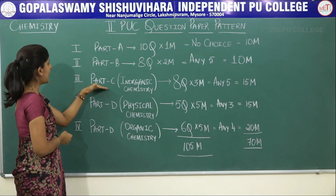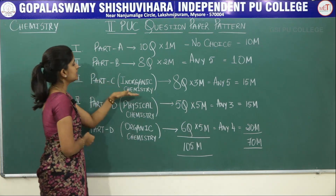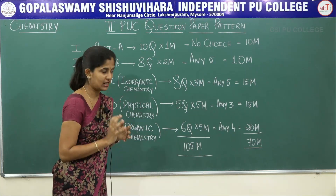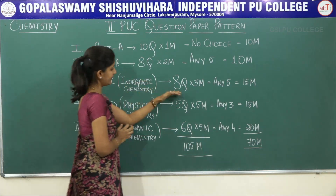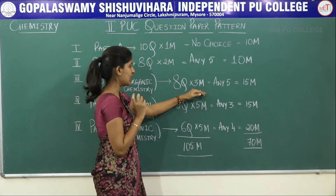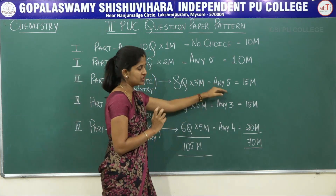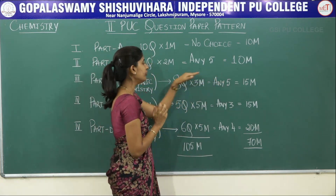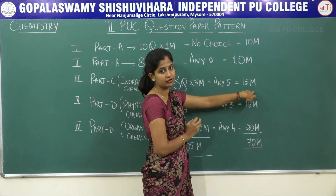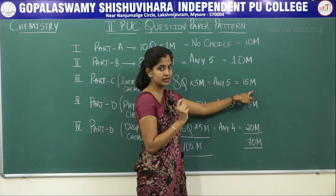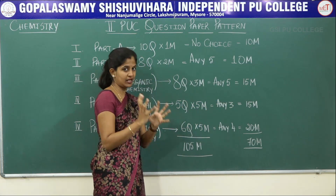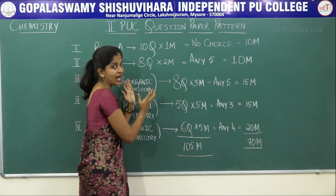Coming to Part C, the third main, it is completely of inorganic chemistry — it comprises questions entirely from inorganic chemistry. It has eight questions, three marks each, and you have to attempt only five of them. Five questions into three marks gives 15 marks for the third main. So only inorganic chemistry questions will appear in Part C.